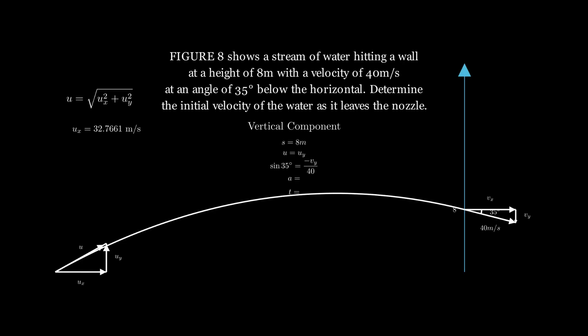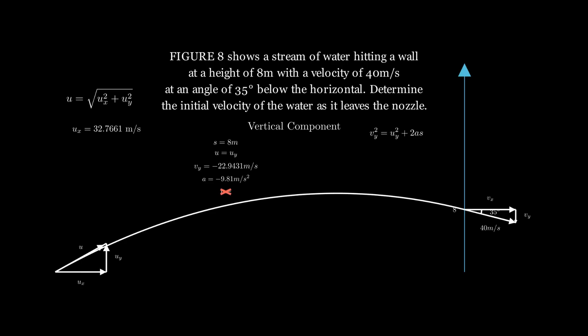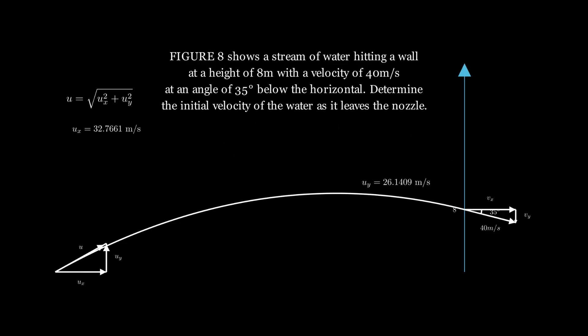Vy is negative because it points downward, and acceleration A = −9.81 m/s². Since T is not given, we use the formula Vy² = Uy² + 2A·S. Substituting all the values, we find Uy = 26.1409 meters per second. Then substituting Ux and Uy into the Pythagorean formula gives U = 41.9161 meters per second.